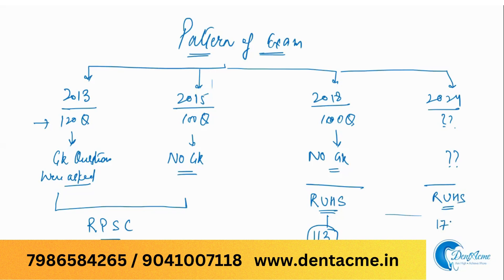Total seats declared so far are 172, and there are reports in the media that these may further increase by 40, though this has not yet been officially notified on the RUHS website. So you can expect around 100 questions based on this pattern. In all these exams, there was one-fourth negative marking, so that is something you can expect in this exam as well.